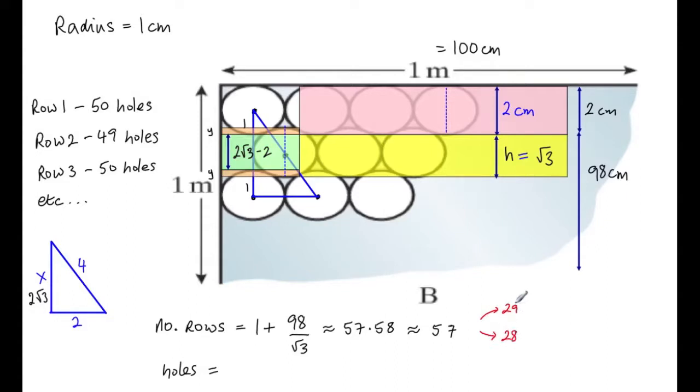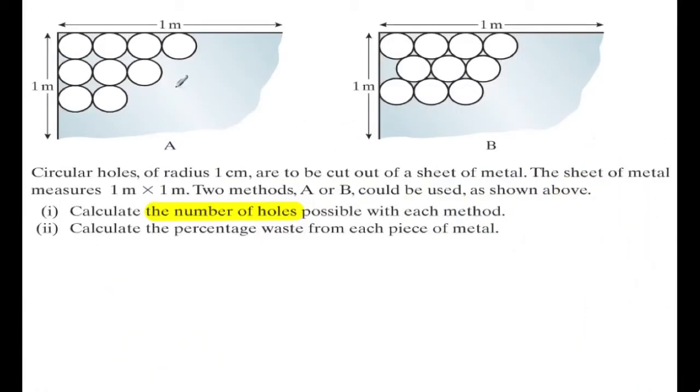So of the 57 rows, 29 of them would have 50 holes and 28 of them would have 49 holes. So the total number of holes is 29 by 50 and 28 by 49, and this is 2822. That's the hard part of the question solved. So the number of holes in the first was 2500 and in the second was 2822.